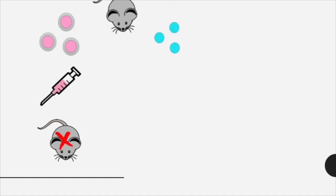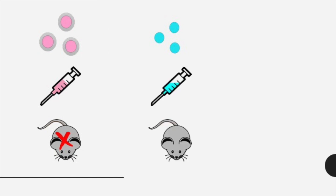The virulent form is a smooth strain that is encapsulated. When it is injected into the mouse it is lethal and the mouse dies. The non-virulent form is a rough strain and does not have a capsule around it. This form is harmless and the mouse lives.